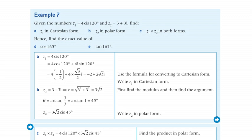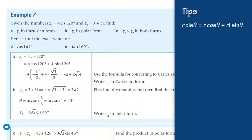Part a. Apply the formula R∠θ = R·cos(θ) + R·i·sin(θ) to find the Cartesian form of the first complex number. 4∠120° equals 4·cos(120°) + 4·sin(120°)·i. Now apply the special trigonometric values of the angle of 120 degrees.